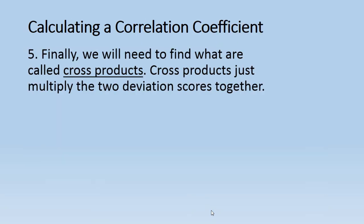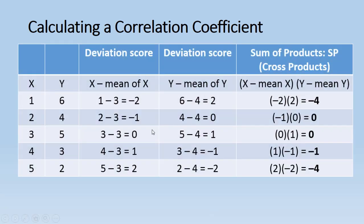So finally what we need to do is find what are called the cross products. Now cross products just multiply—that word product—multiply the two deviation scores together. So let's take a look at this next. Now when you first see this, it may look a little intimidating, but let me walk you through it. It's really not that bad because we've done most of this already. Recall we found the deviation score for X, these values here, and we found the deviation scores for Y. We've already done that. Now all we do to find the sum of the products is we multiply the deviation score for X by the deviation score for Y for a given person.